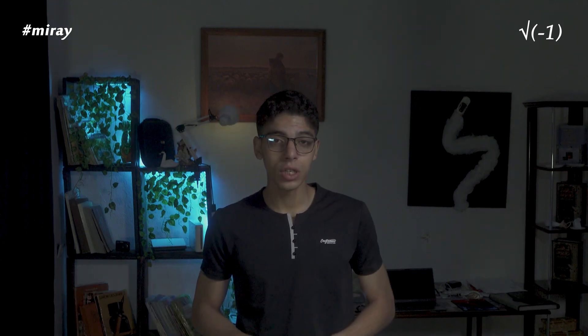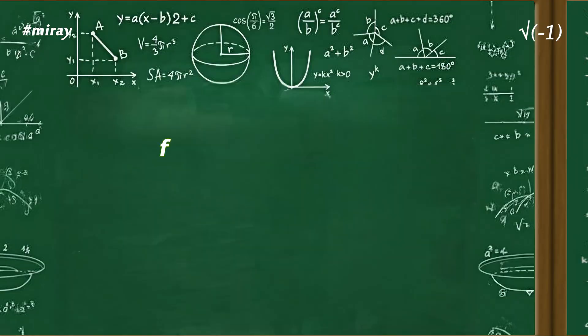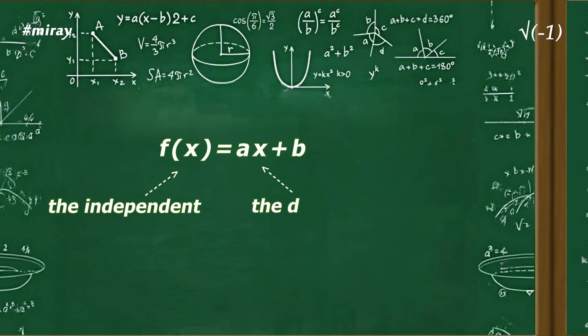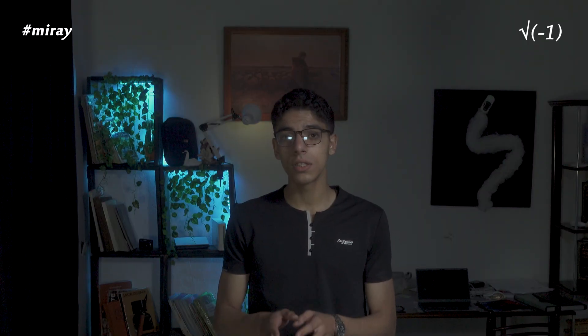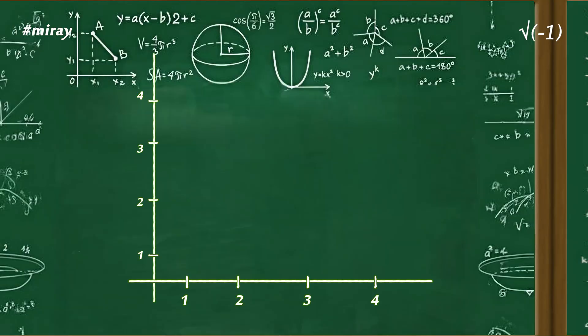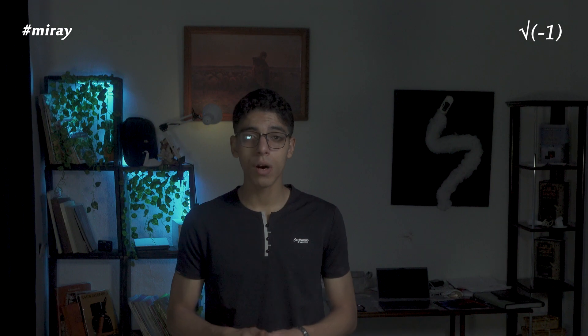From there, the discussion moves to functions — a relationship where a change in one quantity causes a change in another. The variable that we can control or choose is called the independent variable, while the one that reacts to it is the dependent variable. To make it simple, imagine someone who gets angry every time they are interrupted: the more interruptions, the greater the anger. So we can say anger is a function of the number of interruptions.